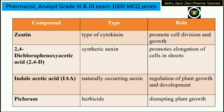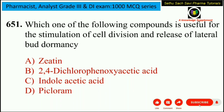Coming to 2,4-D, that is 2,4-dichlorophenoxyacetic acid — it is a synthetic auxin. Auxin helps in elongation of shoot cells. IAA is the natural form of auxin, which helps in plant growth and development. Picloram is a herbicide, meaning it will disrupt plant growth. Coming back to the question, they ask which stimulates cell division as well as releases lateral bud dormancy — the answer is a cytokinin. The cytokinin here is zeatin, so the answer is zeatin.